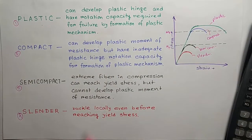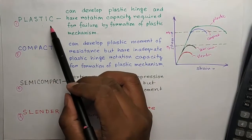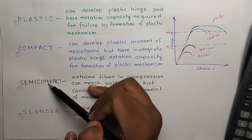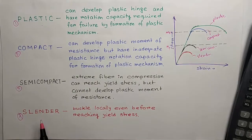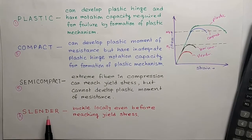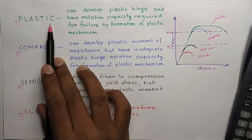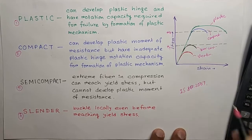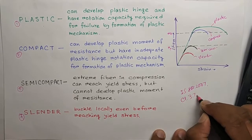So it is quite obvious that this plastic section is most preferable, then comes compact, then semi-compact, and slender section is not used generally. All this section classification you can easily find in the IS 800-2007, detailed clause 3.7.2.